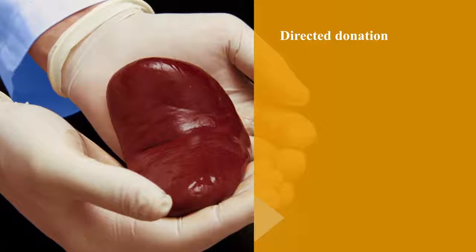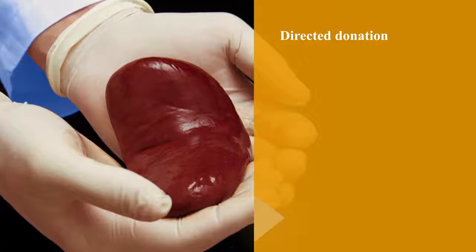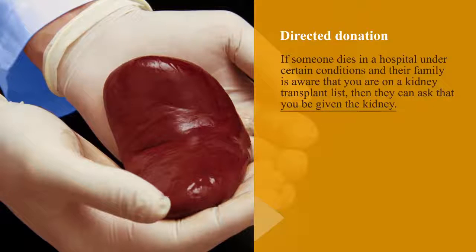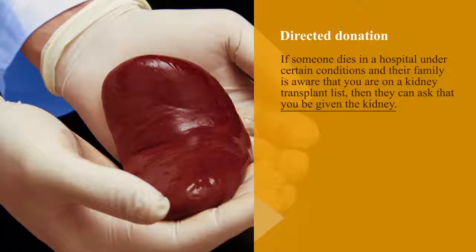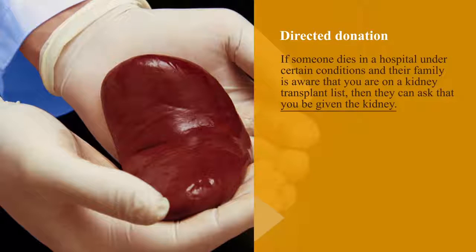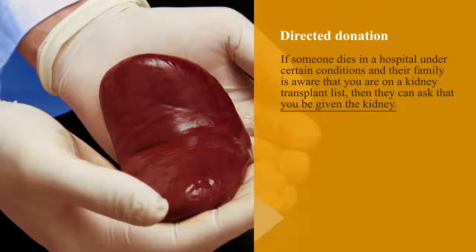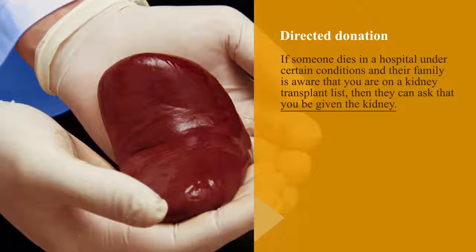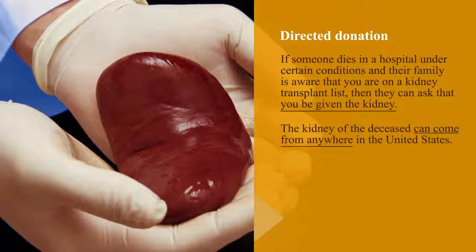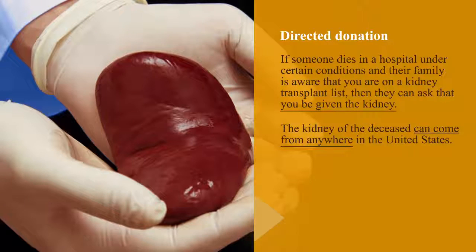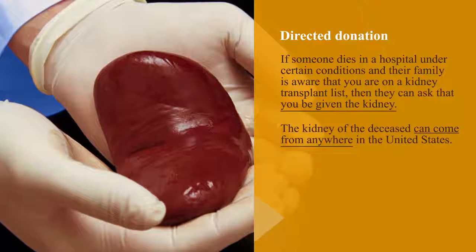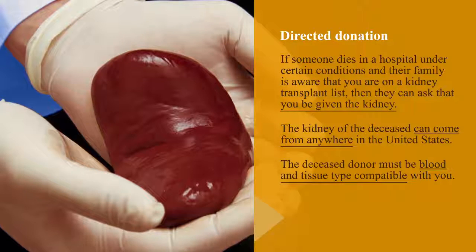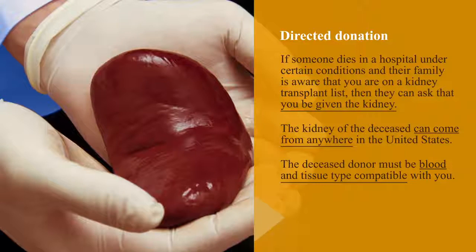Directed donation is another option. If someone dies in a hospital under certain conditions and their family is aware that you are on a kidney transplant list, then they can ask that you be given the kidney. The kidney of the deceased can come from anywhere in the United States. Of course, the deceased donor must be blood and tissue type compatible with you.